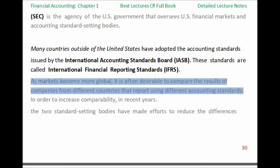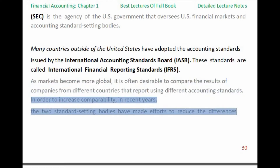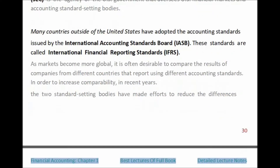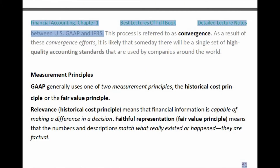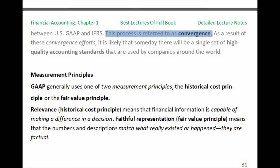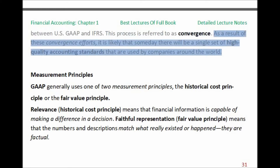As markets become more global, it is often desirable to compare the results of companies from different countries that report using different accounting standards. In order to increase comparability, in recent years, the two standard-setting bodies have made efforts to reduce the differences between U.S. GAAP and IFRS. This process is referred to as Convergence. As a result of these Convergence efforts, it is likely that someday there will be a single set of high-quality accounting standards that are used by companies around the world.